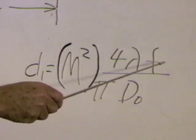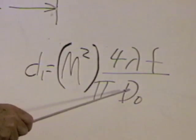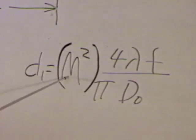M-squared means that if this number, this number being greater than 1, you're going to have a width at your focal point M-squared greater than the width you would have if the beam was perfect.